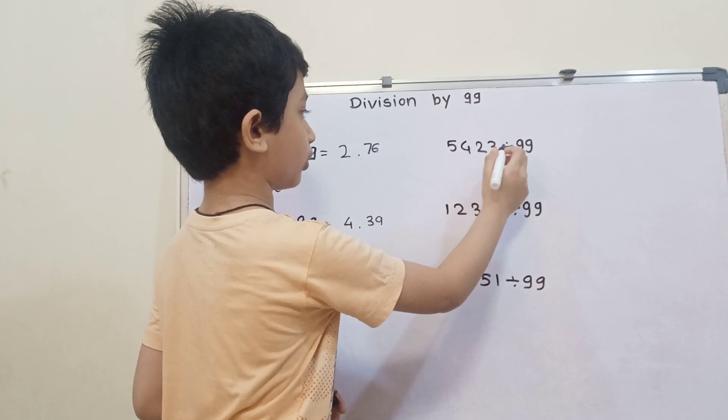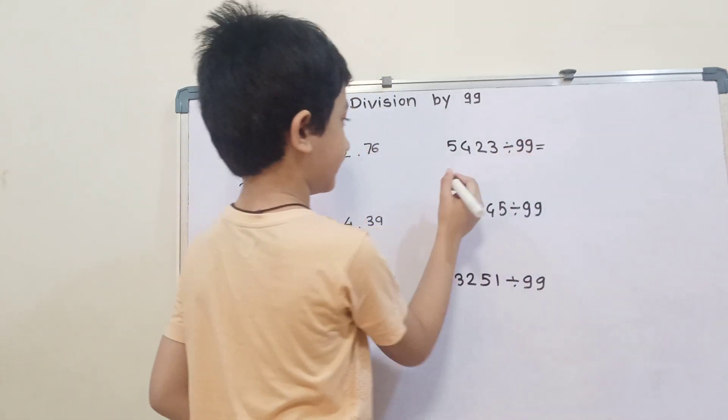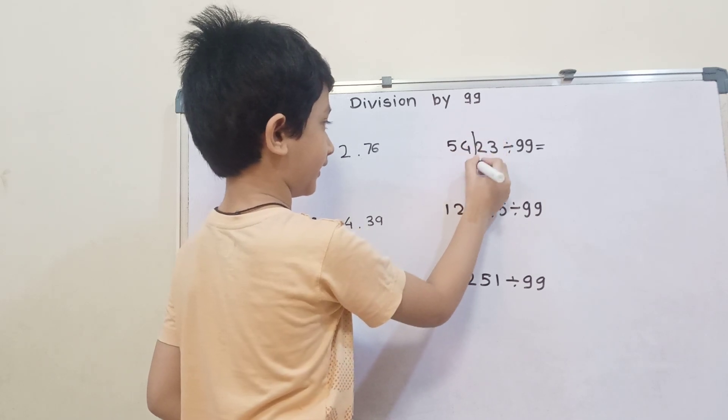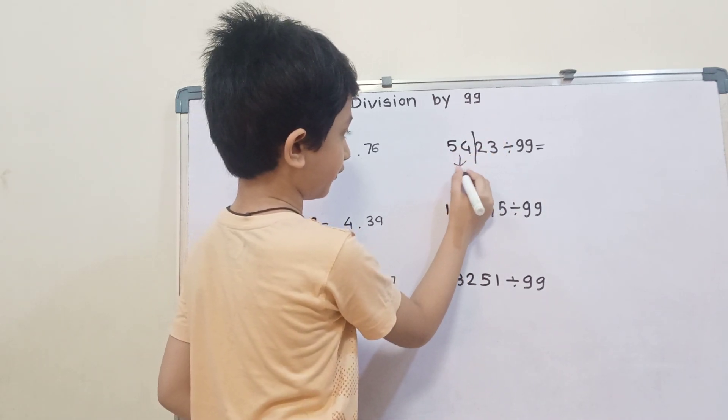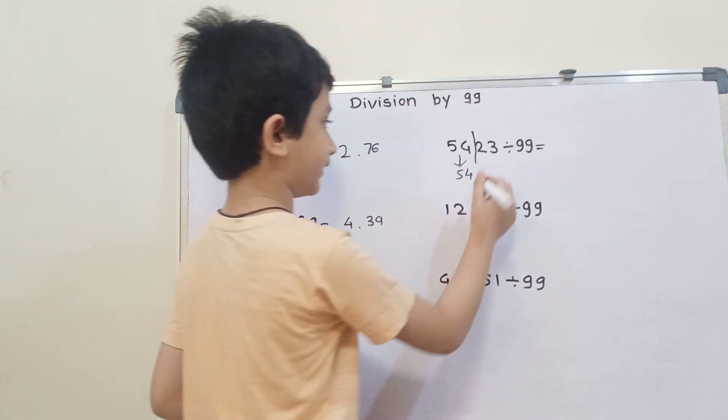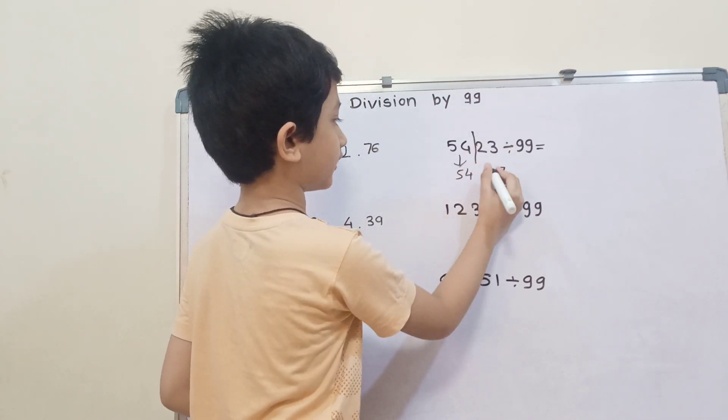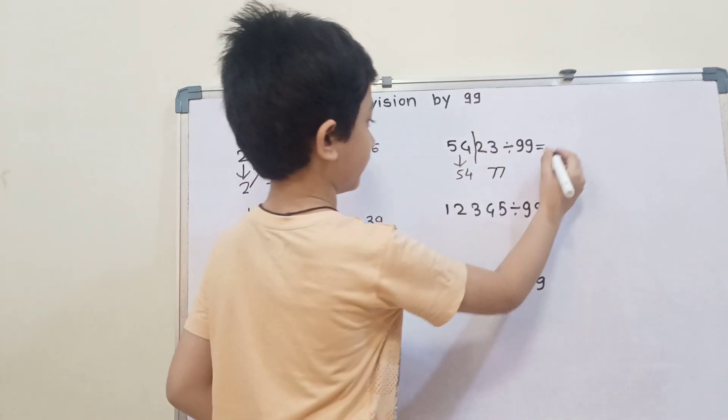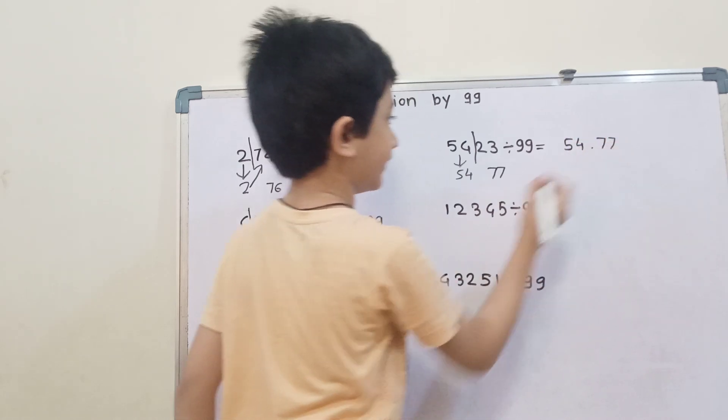Then 5423 divided by 99. We divide it into 2 parts. Write 54 as it is, then 54 plus 23. So 4 plus 3 is 7, and 5 plus 2 is 7. The answer is 54.77.